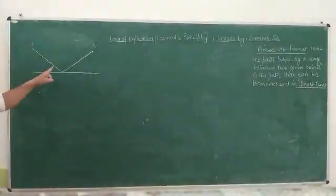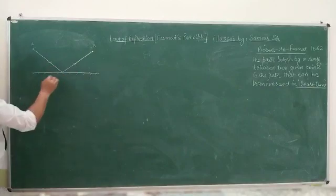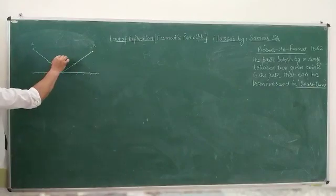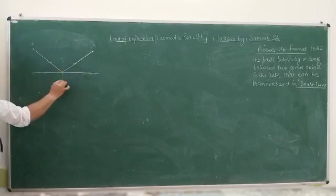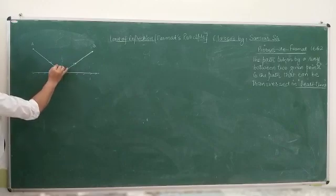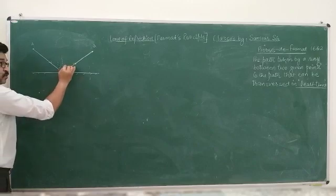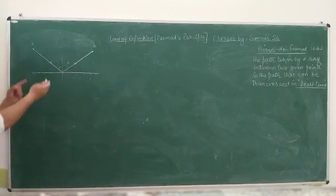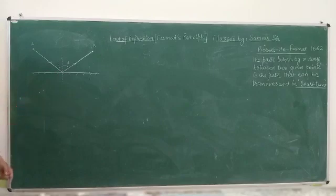Have a look at this. This is your incident light, this is your normal, this is called your angle of incidence, and this is called your angle of reflection. The light gets reflected from the surface.